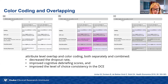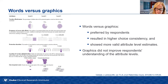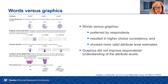Many other studies have been published looking at different ways to help people understand and make comparisons across alternatives. Marcel Yonker and colleagues evaluated the impact of color coding or highlighting where there are differences or similarities between different options. They showed that highlighting overlap and color coding could decrease the dropout rate, improve cognitive debriefing, and improve the level of choice consistency in the DCE.